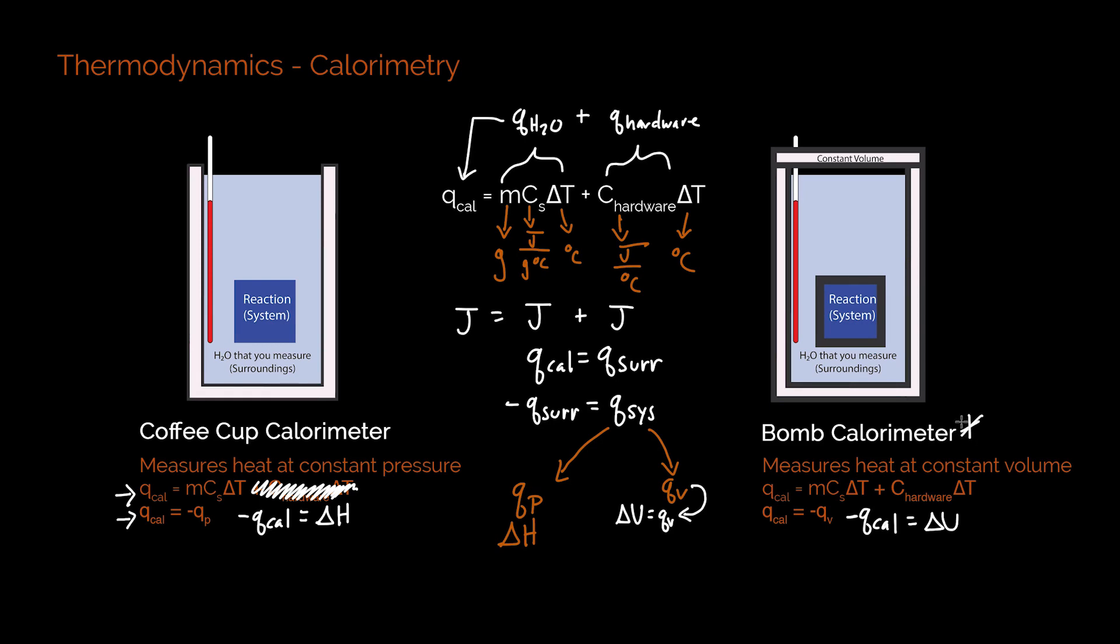Now, I'm going to put a big star here with bomb calorimeters. And I want to point out that this is for combustion reactions. And one thing you should know about combustion reactions is that they give off a ton of heat. So you should definitely expect a positive change in temperature for your surroundings. But what this means is that your q for your system should always be negative in this, which means your delta u of the system, once you get to your final answer, should always be negative.